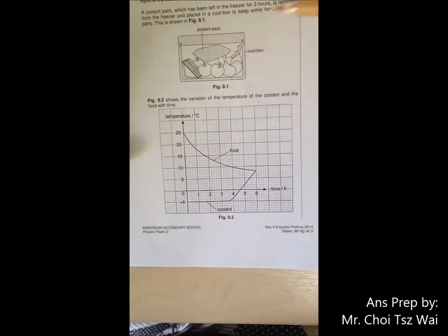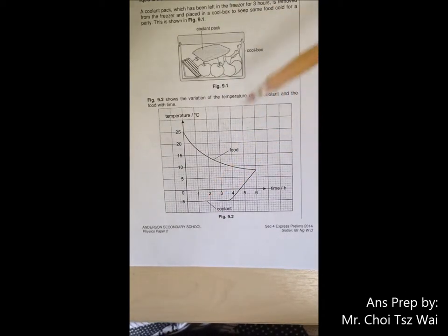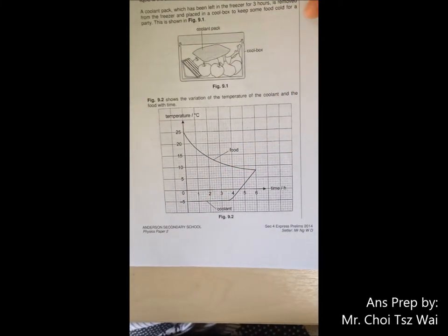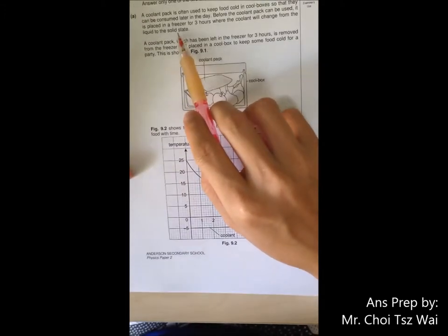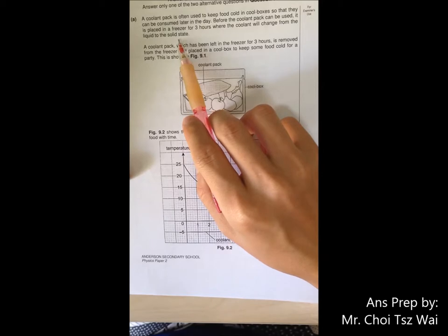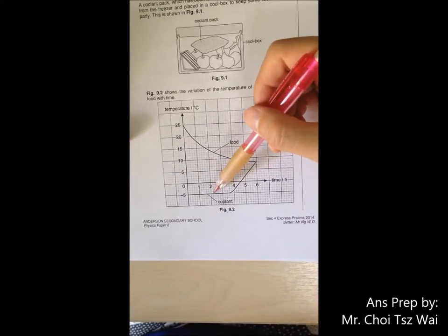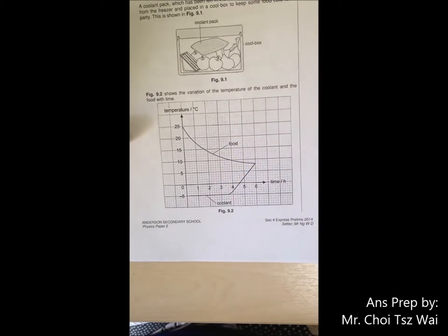Look at the content of the context to see what is the state of the coolant. Is it liquid? Is it solid or what? If you look through this, you can see that the coolant is actually in a solid state at the beginning. So meaning that this state changes from solid to liquid. So with that understanding, let's begin explaining.